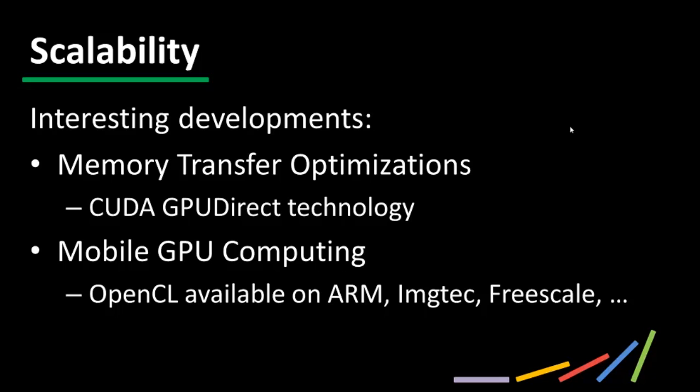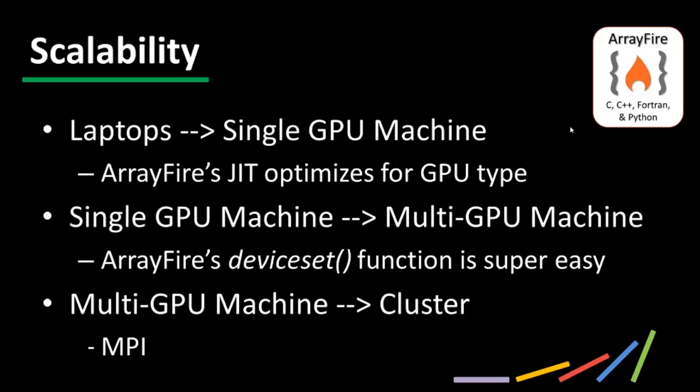At Accelerize we have done several GPU consulting projects on mobile GPUs, and we believe there is a big benefit to accelerating apps — especially computer vision and video processing — directly on smartphones or tablets. Regarding ArrayFire and scalability: from laptops to single GPU machines, ArrayFire's just-in-time compiler automatically makes optimizations for GPU type without any code change, so both the CUDA and OpenCL versions of ArrayFire enjoy scalability here.